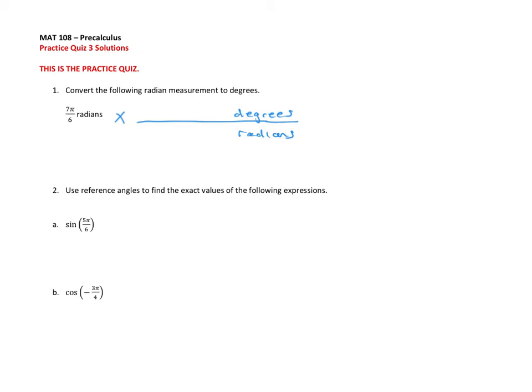There is 180 degrees for every pi radians. This fraction is equal to 1, so it won't change the value — it'll switch the units. I'm going to rewrite this a little bit: I'll note that we're canceling the radians, and what is left over is degrees.